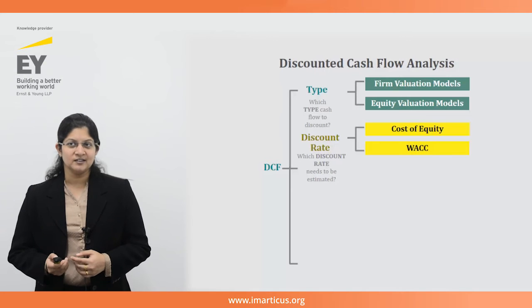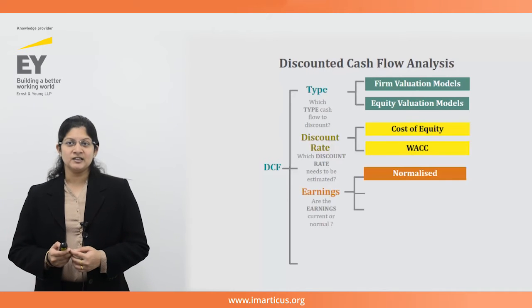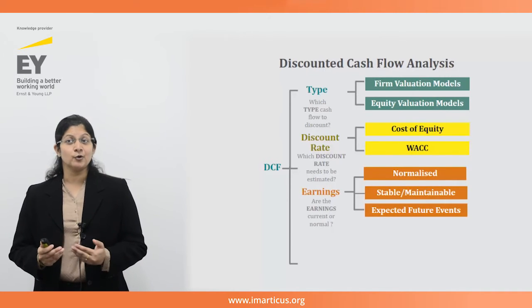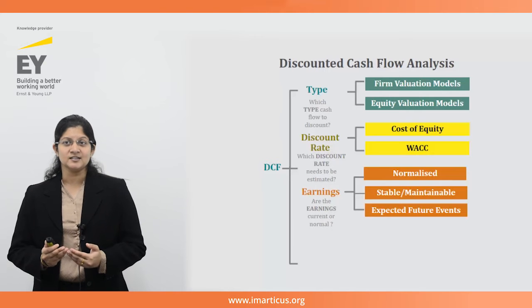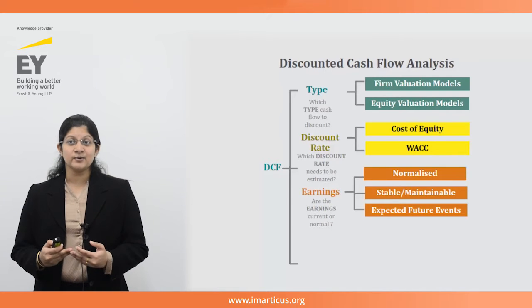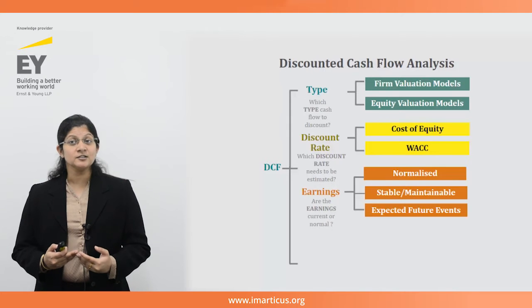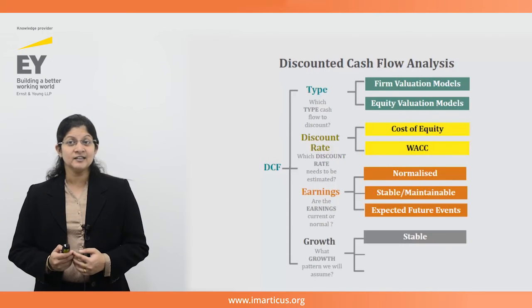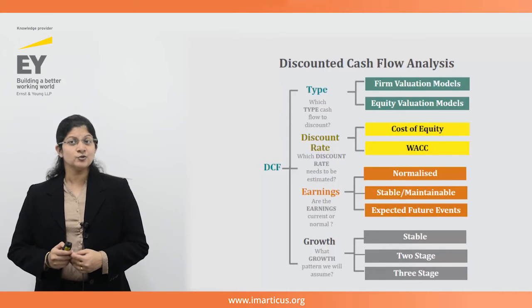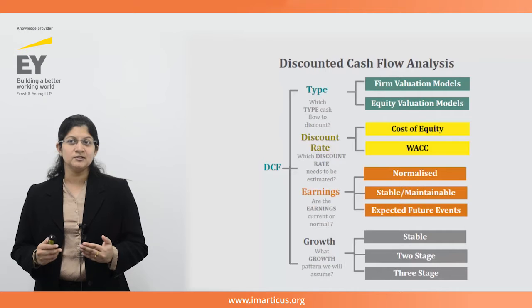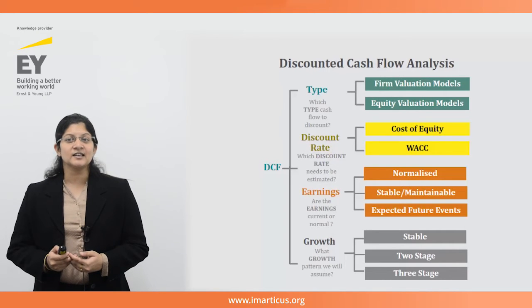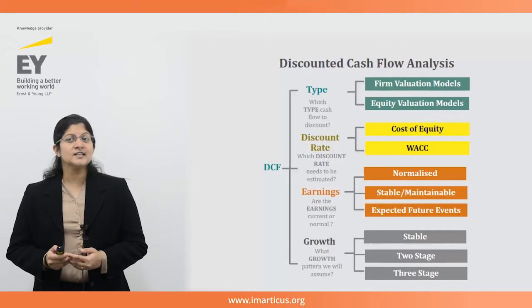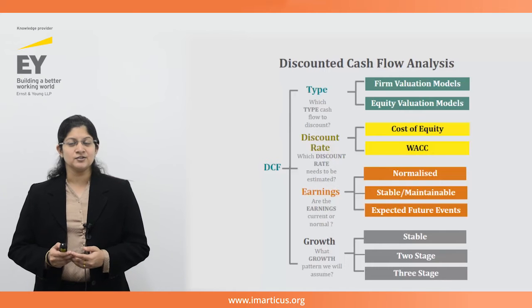Another decision has to be made based on the earnings of the company — whether current or normalized earnings are to be incorporated in the analysis. This means assessing whether the current earnings are stable and maintainable or whether expected future events may change the earning levels. Finally, an important step in the DCF process is the growth stage of the model, where one can distinguish between stable, two-stage, or a three-stage model and execute the calculations accordingly.